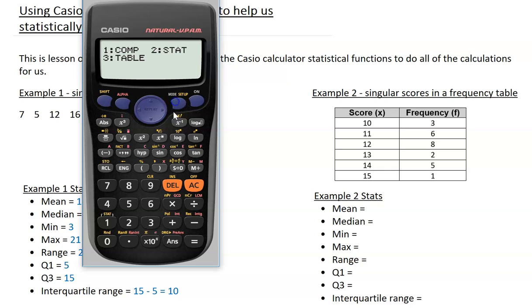Now when I go to mode and select stat for one variable, you'll see that I have the score column and now a frequency column, and I can go through and enter in those bits of data. So if I do the scores first, you'll notice that it's adding a frequency of 1, which I can then change by pressing the across arrow and changing those frequencies by pressing equals after I enter them. Always check that your entries are correct before proceeding.